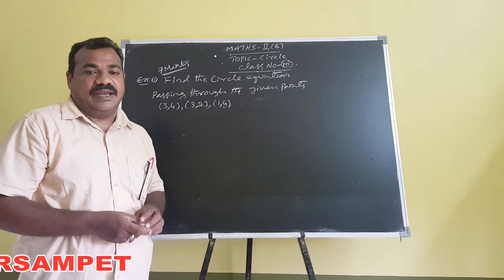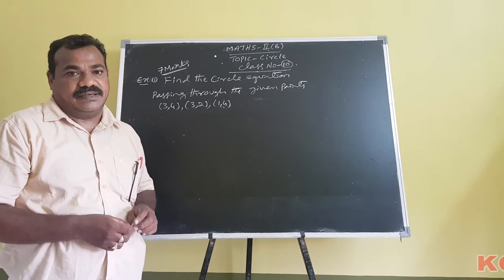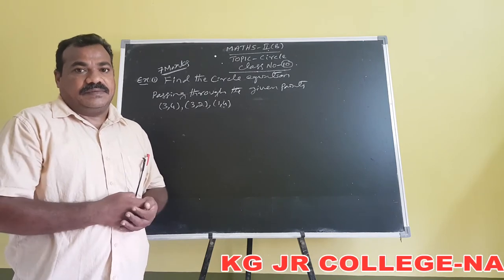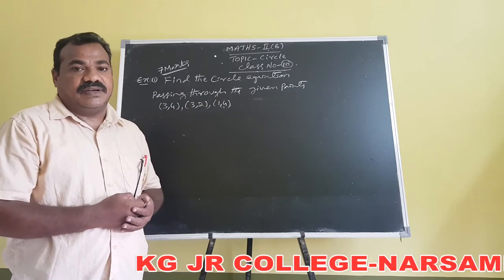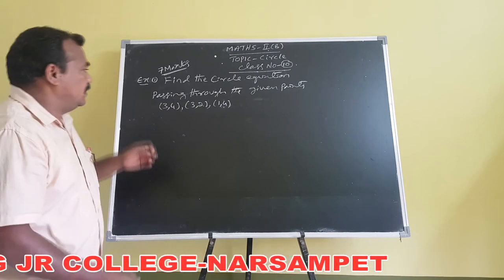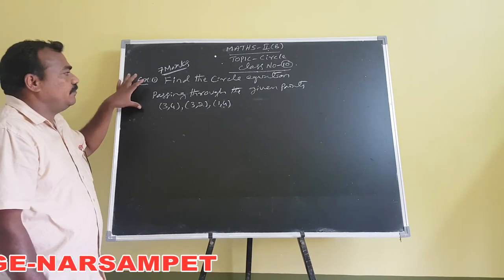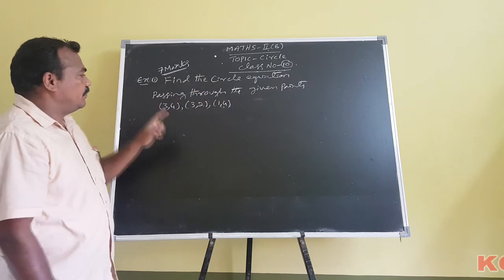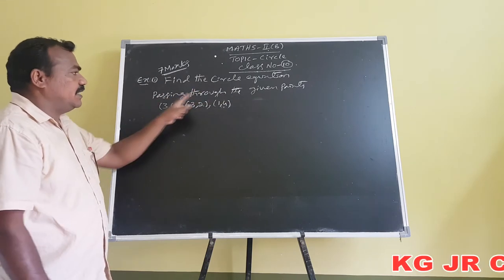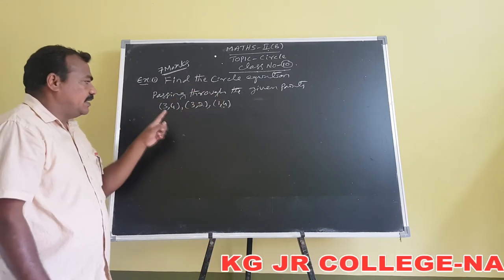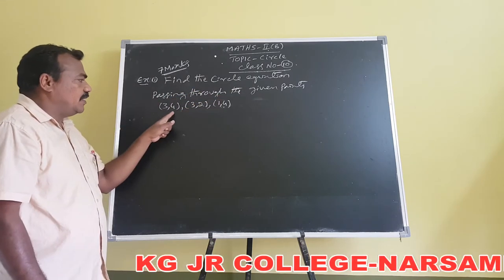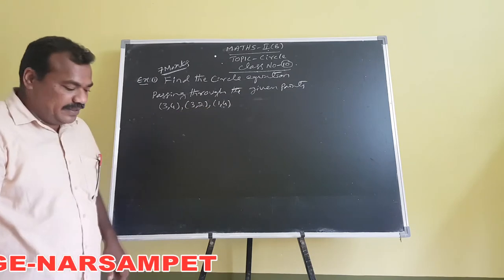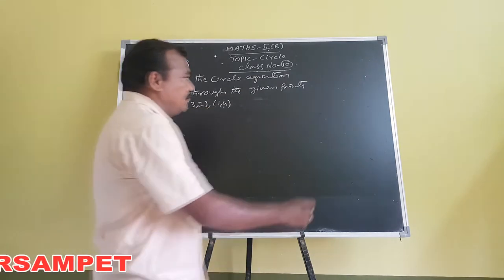In this class, we have to discuss some solved question problems. Here is one of the problems: find the circle equation passing through the given points (3,4), (3,2), and (1,4). Here is a rough diagram.